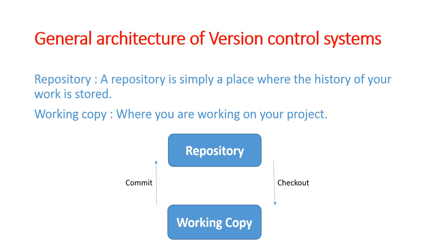Repository - जैसा कि हमने पहले tutorials में देखा, हमने हमारा project बनाया और उसमें .git नाम का folder बन जाता है जब हम git init करते हैं। इसमें हम जितने भी changes कर रहे हैं हमारे project में, उसकी history वहाँ पे store होती है। So, repository is simply a place where the history of your work is stored।